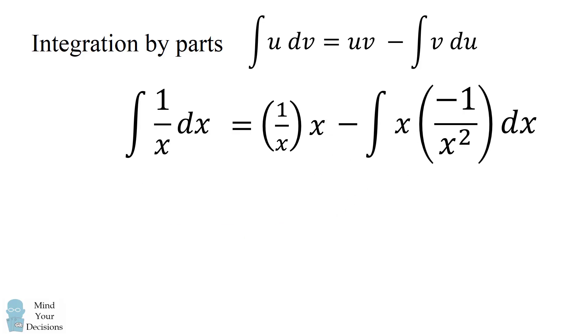We now need to simplify this equation. 1 over x times x will be equal to 1, and the next integral will all simplify to be the integral of 1 over x dx. And this is all equal to the integral of 1 over x dx.